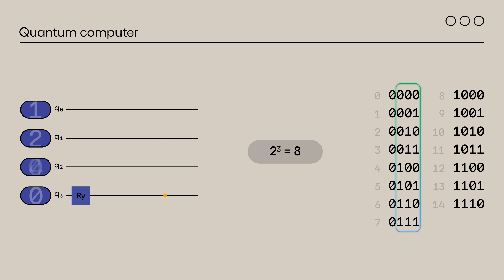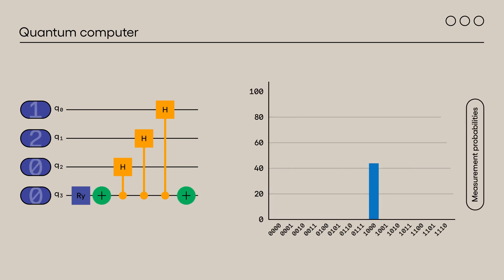This distribution is obtained by applying a Hadamard gate to q0, q1 and q2 only when q3 is in the 0 state. These 3 gates are framed by NOT gates to use the 0 state as the control state. At this point, every state from 0 to 7 has a 1 in 15 chance of being measured.